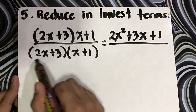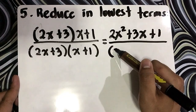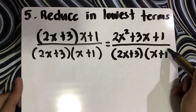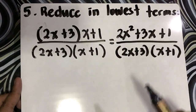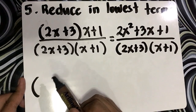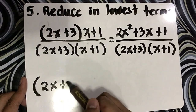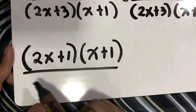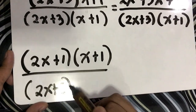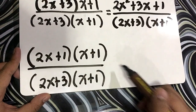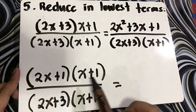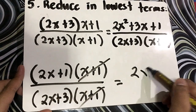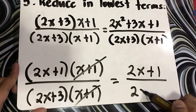All over — since the denominator is in factored form, we can just copy: 2x plus 3, times x plus 1. Now we need to factor the numerator. The factors of the numerator are 2x plus 1 and x plus 1. All over 2x plus 3, times x plus 1. Now we can cancel x plus 1 and x plus 1. So the final answer is 2x plus 1, all over 2x plus 3.